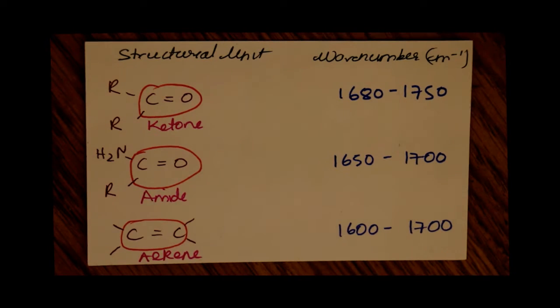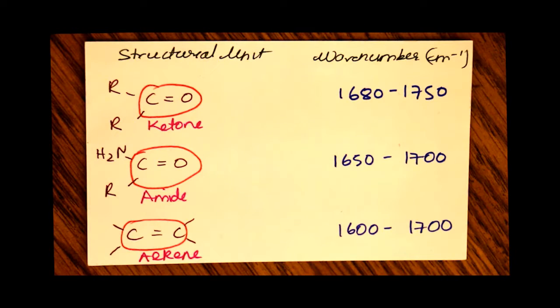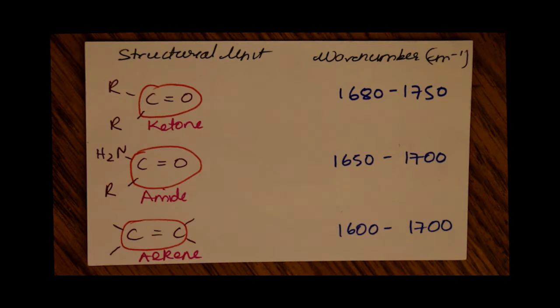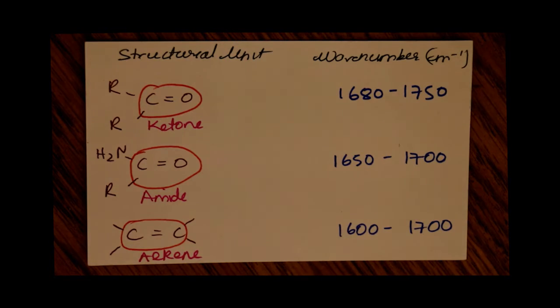The bond between carbon and oxygen, which is a double bond in a ketone, has a peak range between 1680 and 1750 inverse centimeters, as seen here.